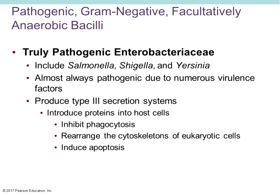The three we're going to talk about are Shigella, Salmonella, and Yersinia pestis. Almost all of these are always pathogenic because they have lots of virulence factors — something that allows them to evade any aspect of your immune system. They make these type 3 secretions, like the Shiga toxin that E. coli O157:H7 produces. As a result of these type 3 secretions, they are able to inhibit phagocytosis of the host cells.